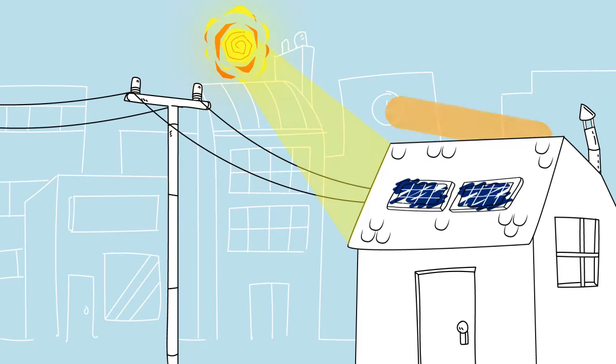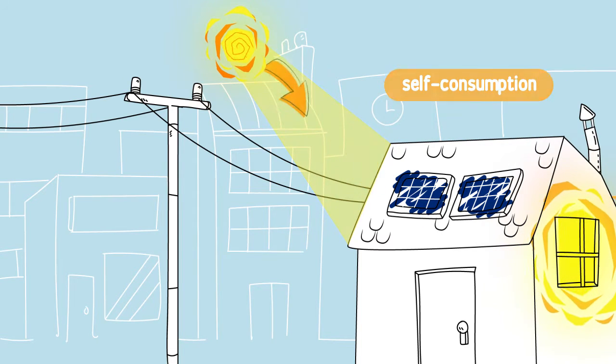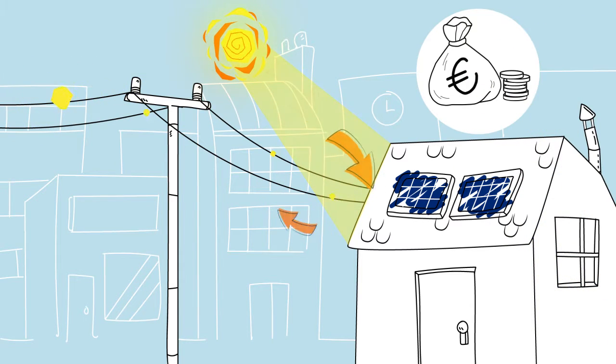Another system, called self-consumption, uses photovoltaic panels to produce electricity for your own household and sell the surplus to the power grid to share the renewable energy with your neighbors.